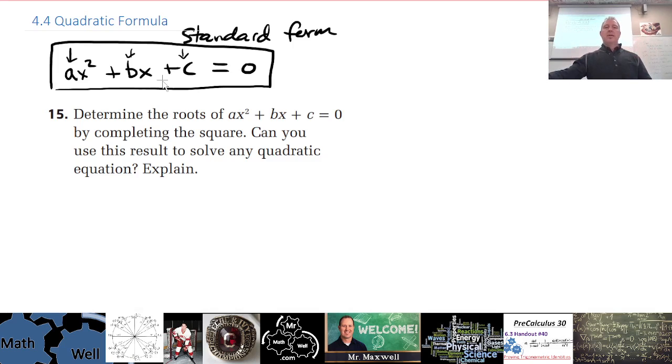This was a question that was asked in 4.3, and this is what's going to launch off the explanation of what the quadratic formula is. If you were able to do 15, which would have been very challenging for you probably, because what we're doing is we're completing the square on this equation where we don't have actual numbers for a, b, and c. So it is a bit of a complicated solving process.